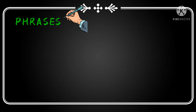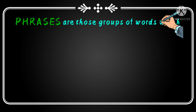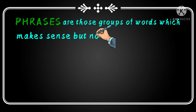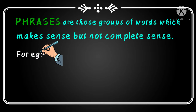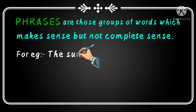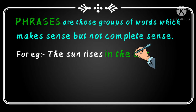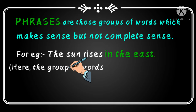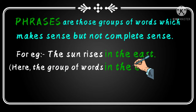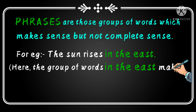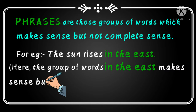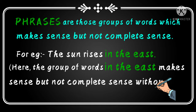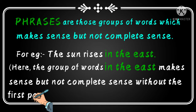Phrases are groups of words which make sense but not complete sense. For example: 'The sun rises in the east.' Here the group of words 'in the east' is a phrase, which makes sense but not complete sense without the first part of the sentence.